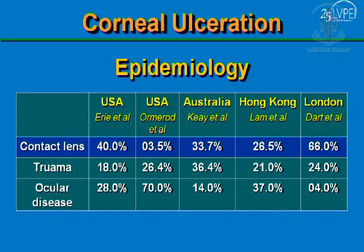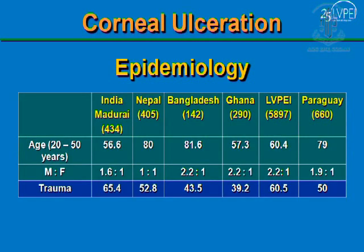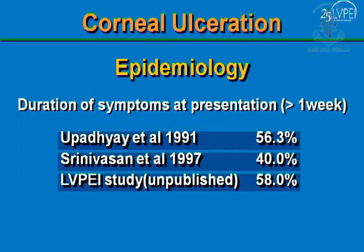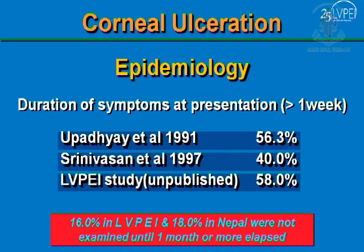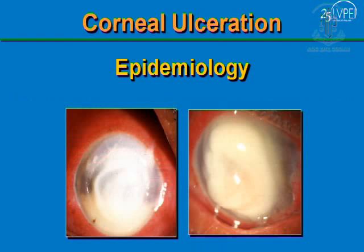In the Western world, contact lens use is the most important predisposing factor for corneal infection, followed by ocular surface diseases in the elderly population. In contrast, in countries like India, Bangladesh, Nepal, and Ghana, trauma is the most important risk factor. Additionally, most patients presenting to ophthalmologists have a longer duration of symptoms before seeking care — nearly 20% of patients at LV Prasad Eye Institute presented with complaints of more than one month duration, resulting in corneal infiltrates extending from limbus to limbus.